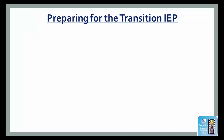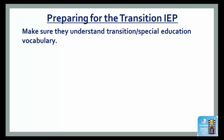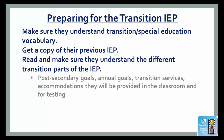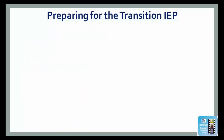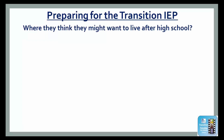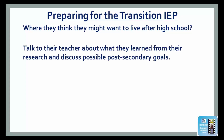The last thing you want to talk to your students about is preparing for their transition IEP. First, make sure they understand transition and special education vocabulary. Give them or have them get a copy of their previous IEP, and tell them to read and make sure they understand the different transition parts of the IEP: post-secondary goals, annual goals, transition services, and accommodations that will be provided in the classroom and for testing. Then tell them to research some jobs or careers they are interested in for employment, and think about whether these jobs or careers require post-high school training. Ask your students to think about where they might want to live after high school — depending on their job or career options, they may be living at home or in a dorm. Tell them to talk to their special education teacher about what they learned from their research and discuss possible post-secondary goals.